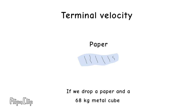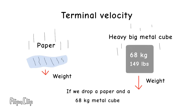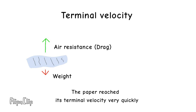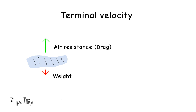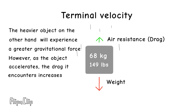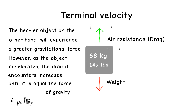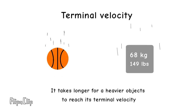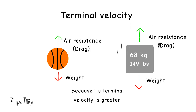If we drop a paper and a 68 kilogram metal cube, the paper has more surface area and reaches its terminal velocity very quickly. The heavier object, on the other hand, will experience a greater gravitational force. However, as the object accelerates, the drag it encounters increases until it equals the force of gravity, reaching its terminal velocity. The terminal velocity is greater for greater weight. It takes longer for a heavier object to reach its terminal velocity because its terminal velocity is greater.